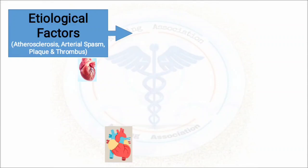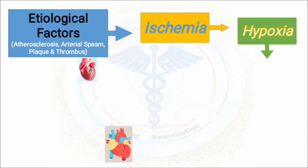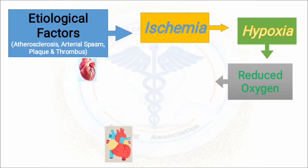The first cause is ischemia. Ischemia means a low level of blood in the tissues — blood levels go down in the tissues, which will be reduced, and that will cause hypoxia. As we know, oxygen is decreasing — reduced oxygen in the tissues or cells.